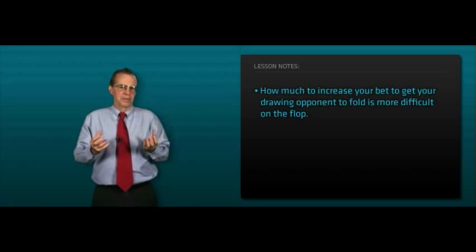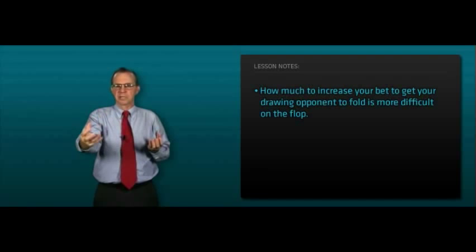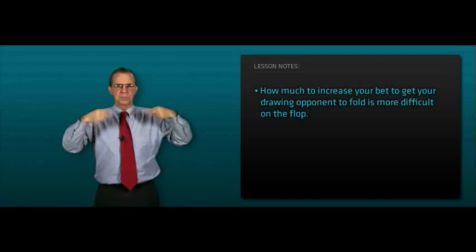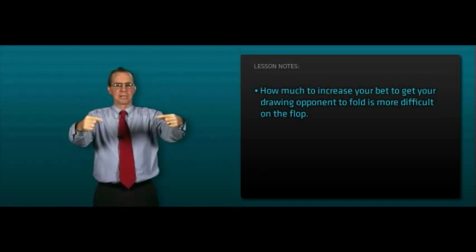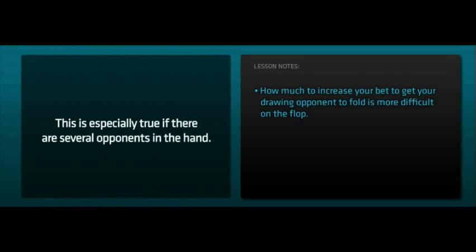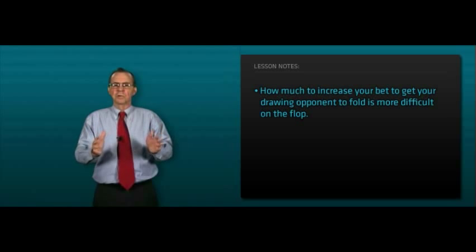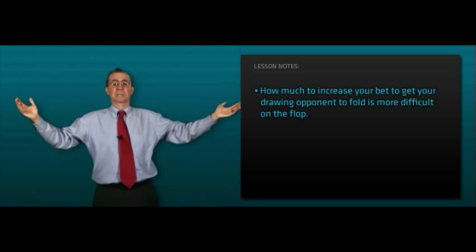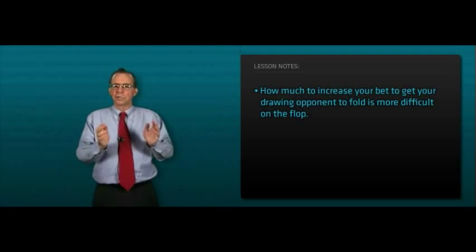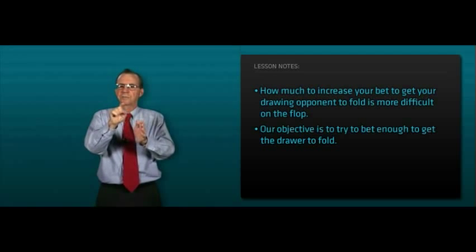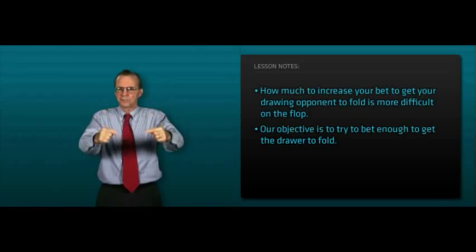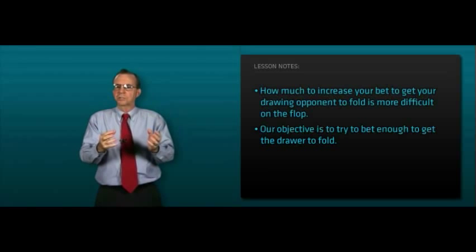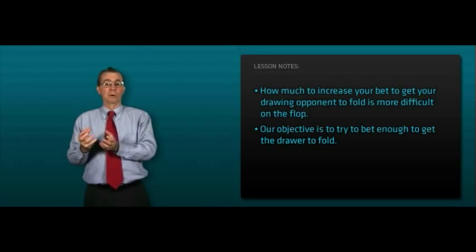Smart opponents will think in terms of the implied money in the pot as opposed to the amount that you might bet right now. This is especially true if there are several opponents in the hand. Some opponents will call with ace-king just because they believe in the hand. As always, your objective is to try to bet enough to get the drawers to fold, but not so much that we lose too much when we're wrong.